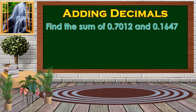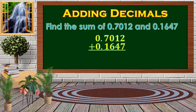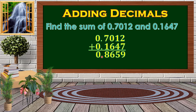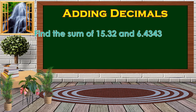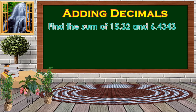For example, we're going to find the sum of 0.7012 and 0.1647. First we need to align the decimal points — as you can observe, the decimal point is aligned. Then we add them like adding whole numbers: 2 plus 7 is 9, 1 plus 4 is 5, 0 plus 6 is 6, 7 plus 1 is 8. Bring down the decimal point, and 0 plus 0 is 0.